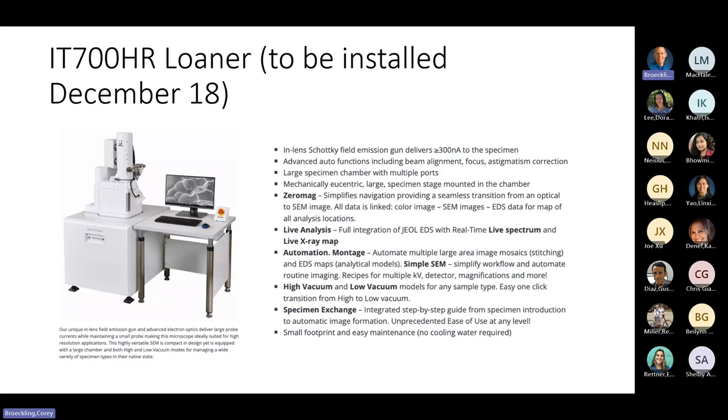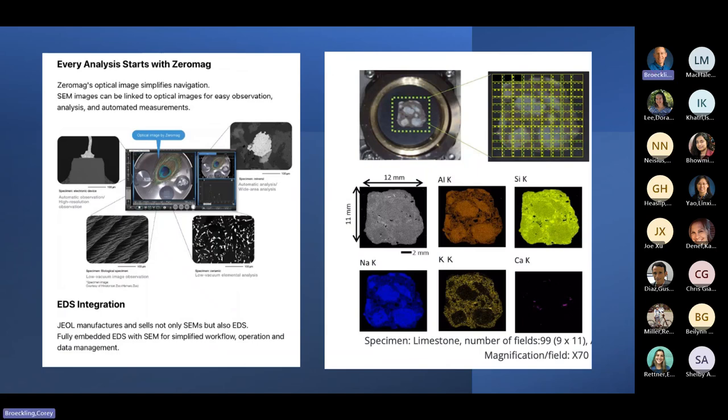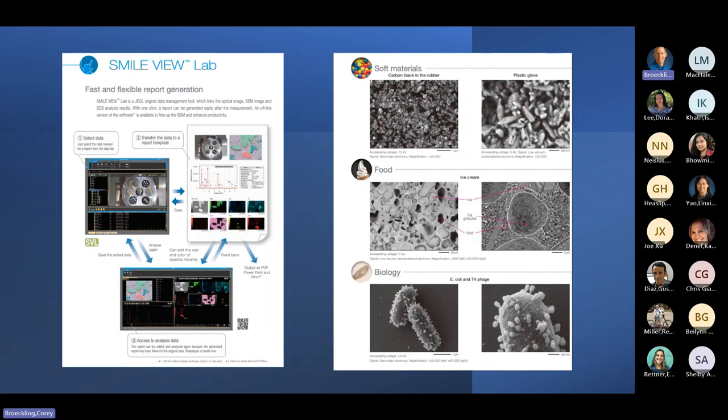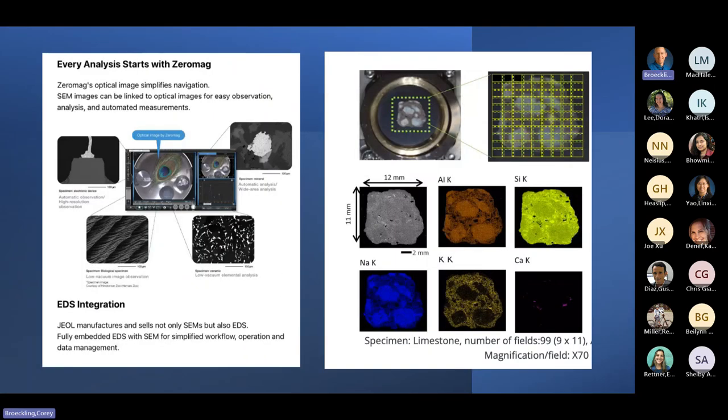One of the things I really like is that you can go take a picture with your iPhone or with the microscope itself, optical picture, and put your sample in. So if you have multiple samples, you can then take the picture, point, and go to them very easily. Those of you that are using the present 6500 realize if you put multiple samples in, you have to spend time sorting out where you're going.